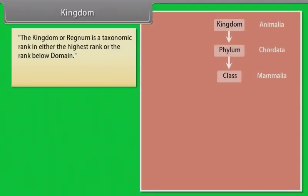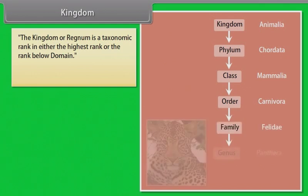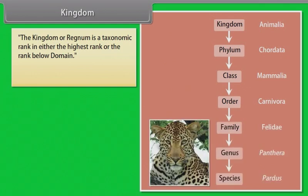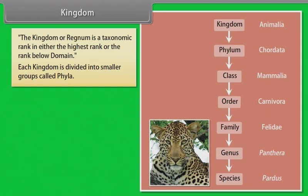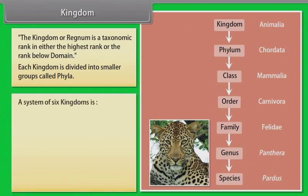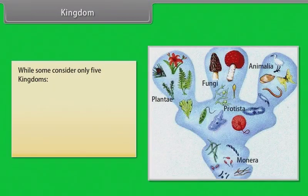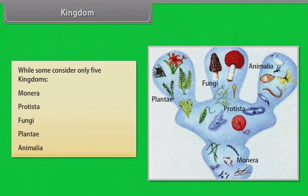The kingdom, or regnum, is a taxonomic rank that is either the highest rank or the rank below domain. Each kingdom is divided into smaller groups called phyla. A system of six kingdoms includes: Animalia, Plantae, Fungi, Protista, Archaea, and Bacteria. While some consider only five kingdoms: Monera, Protista, Fungi, Plantae, and Animalia.